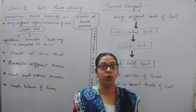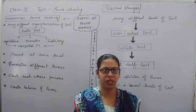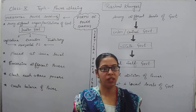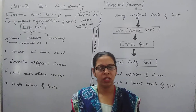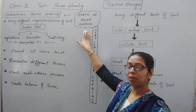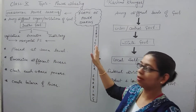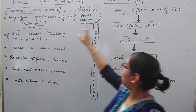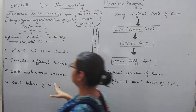In your book we are discussing four points, but here I have taken two because these are very important, and through different ways questions are being asked from these two parts. So let us start. Forms of power sharing means different ways of sharing power. We are discussing horizontal power sharing and vertical power sharing.